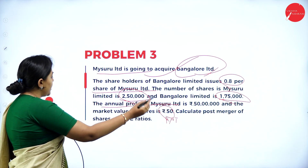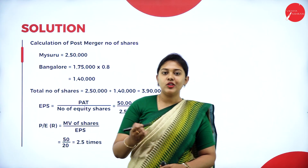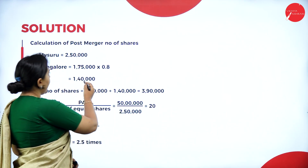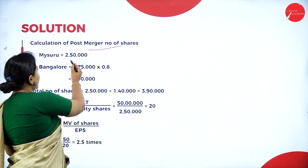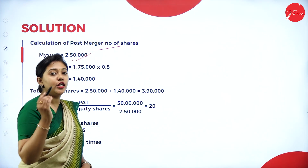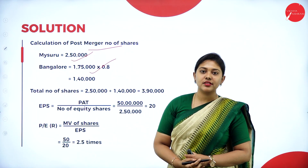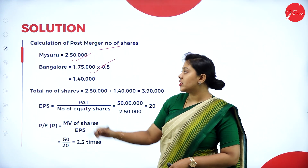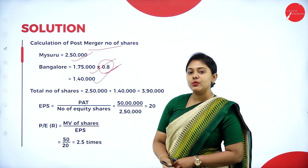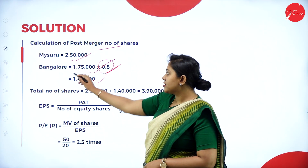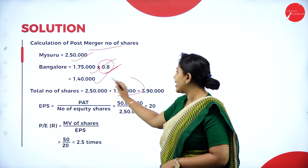Calculate the post-merger number of shares and the price-to-earning ratio. Calculation of post-merger number of shares: Mysore Limited has 2,50,000 shares. Bangalore Limited has 1,75,000 shares issued at 0.8, giving 1,40,000 shares. Total post-merger shares: 2,50,000 plus 1,40,000 equals 3,90,000.